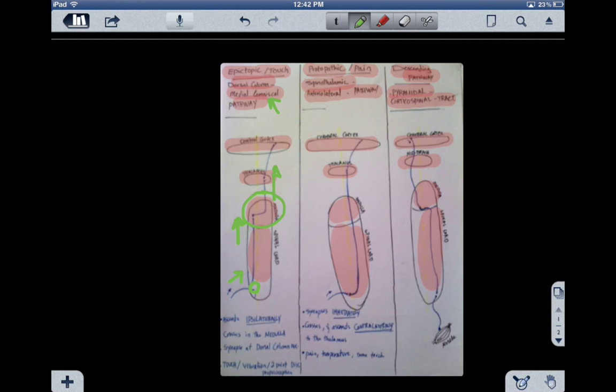Where is that exactly, specifically, the decussation happened? In the dorsal column nuclei in the medulla. After that, it ascends to the thalamus, also contralaterally. Where exactly in the thalamus? In the VPL, or ventral posterior lateral nuclei of the thalamus.